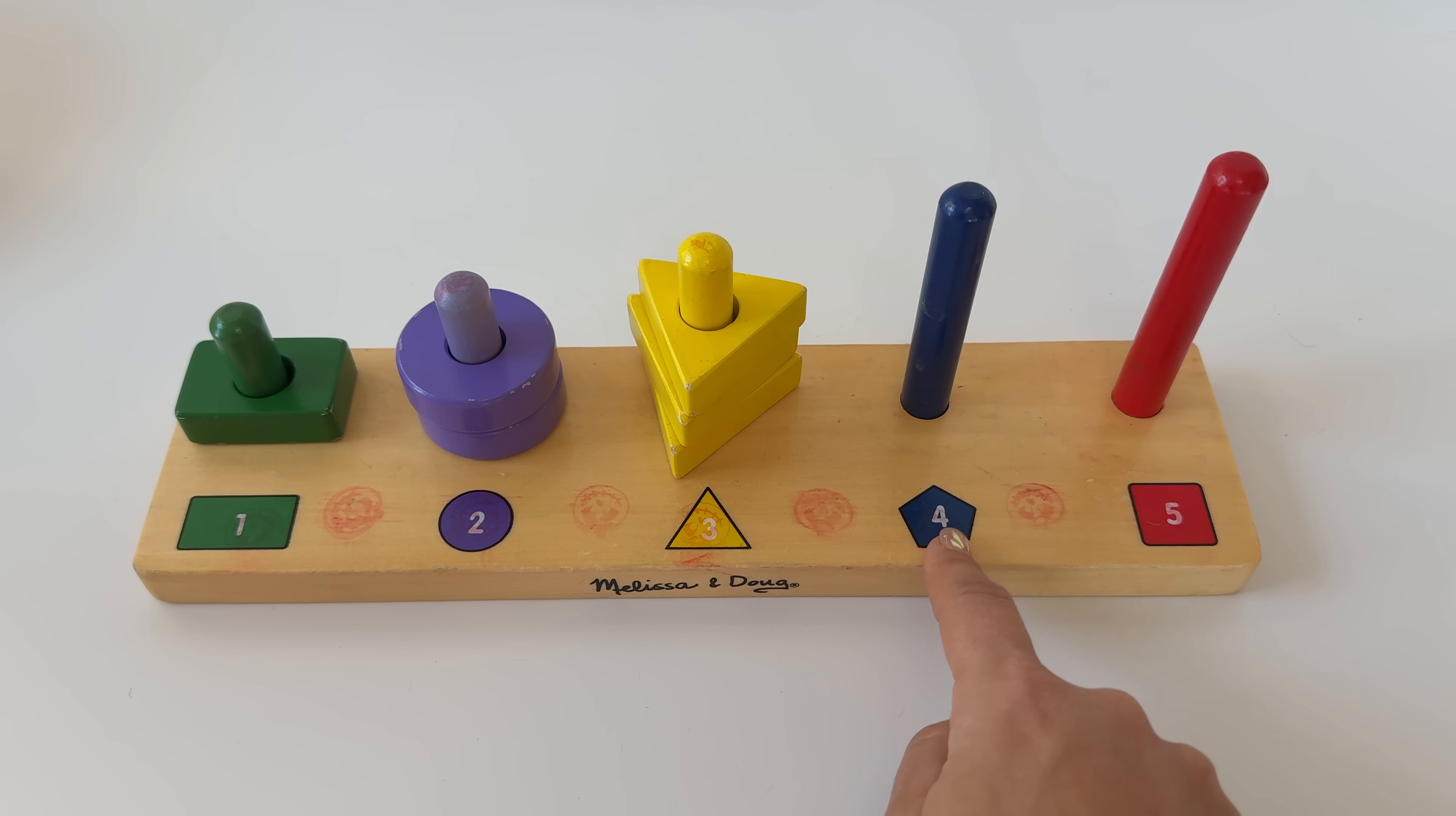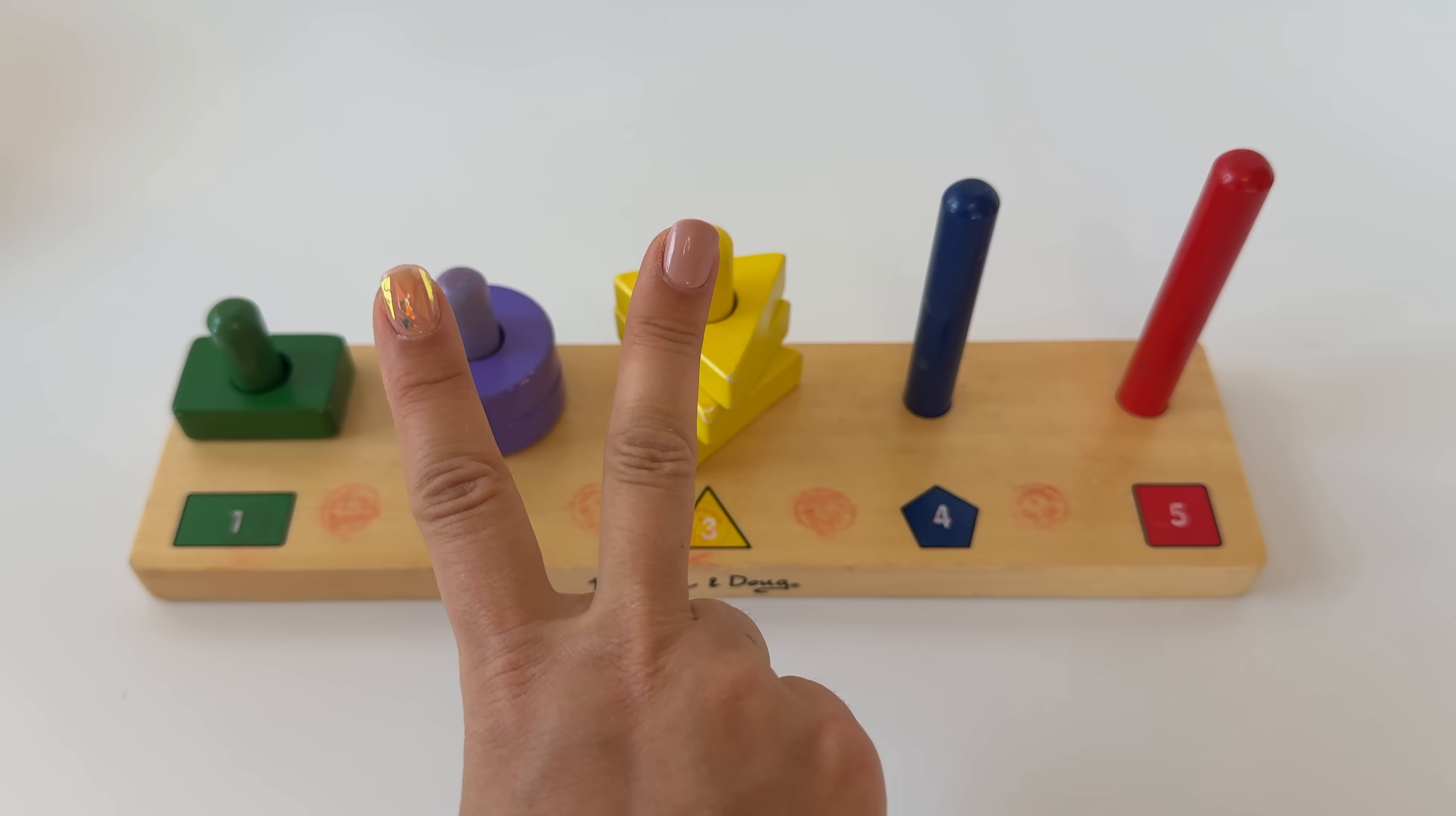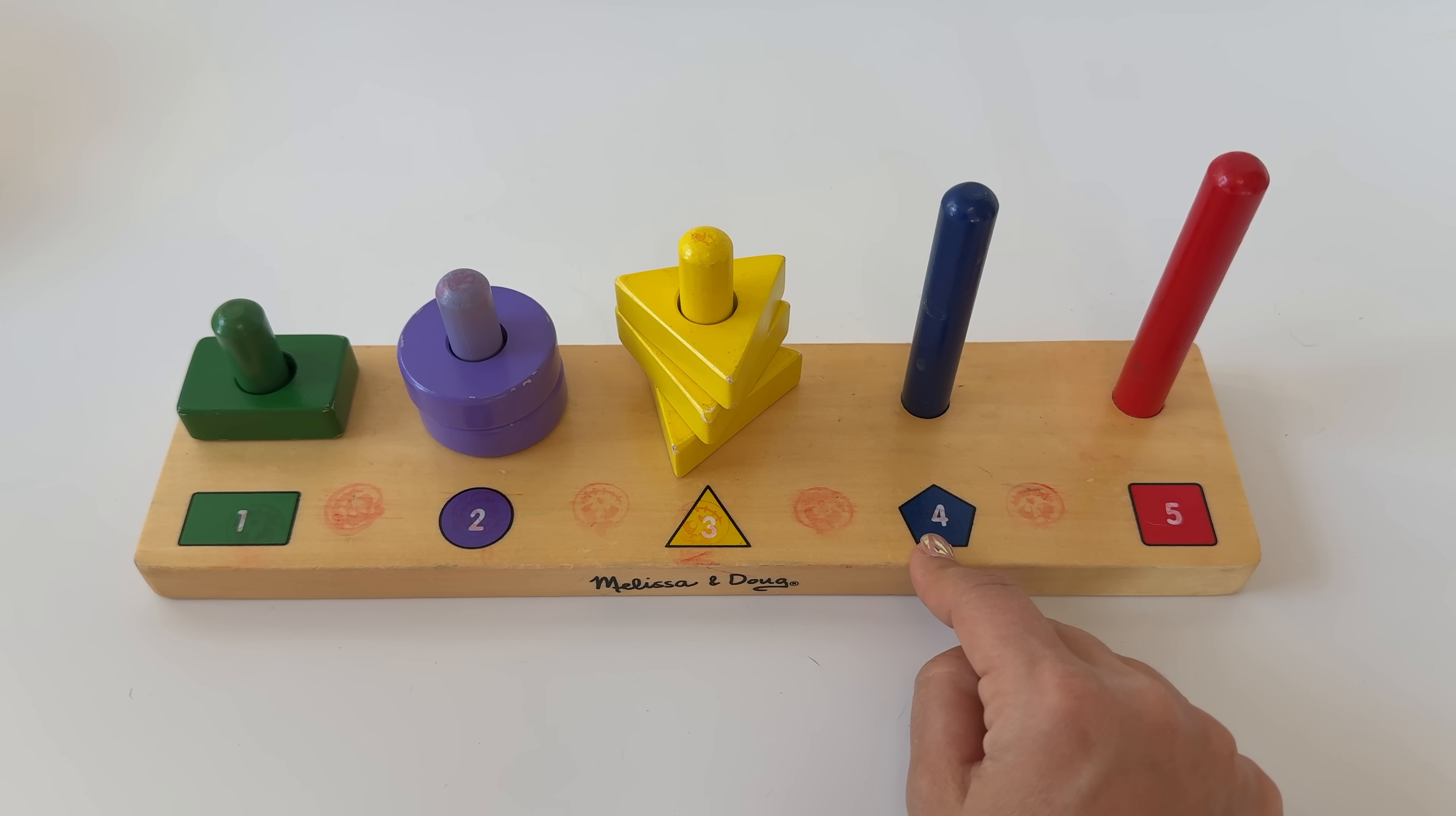Let's see what number we need next. Counting from the left. One, two, three, four. Four. Four. Let's count to four on our fingers. One, two, three, four. Nice job. What color is the four? It's blue. And the shape is a pentagon. Say pentagon. Yeah, pentagon. A pentagon has five sides.